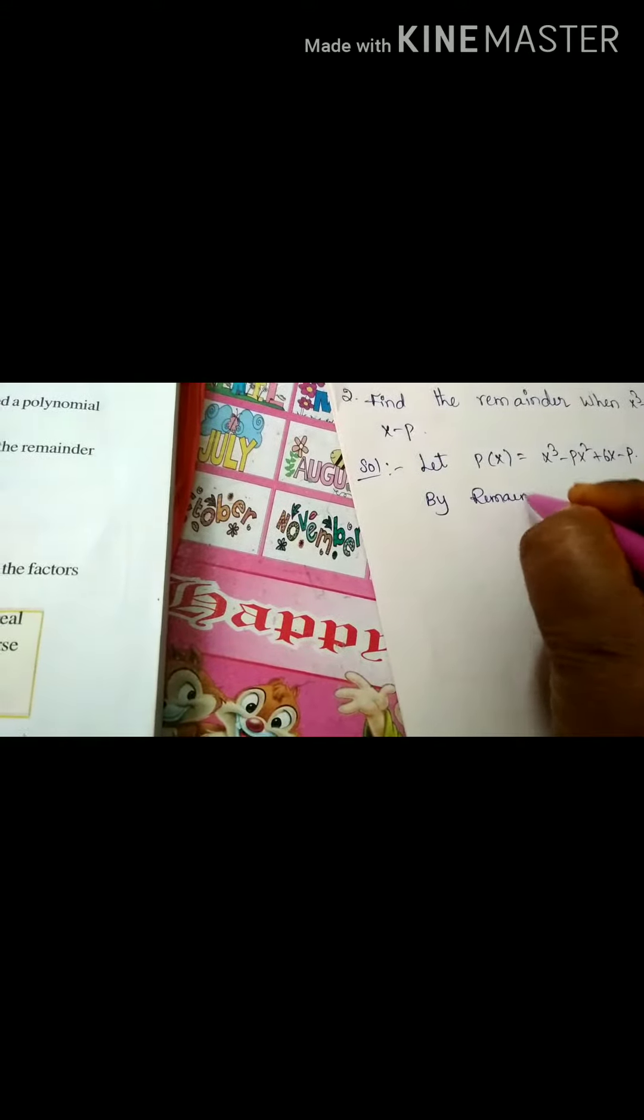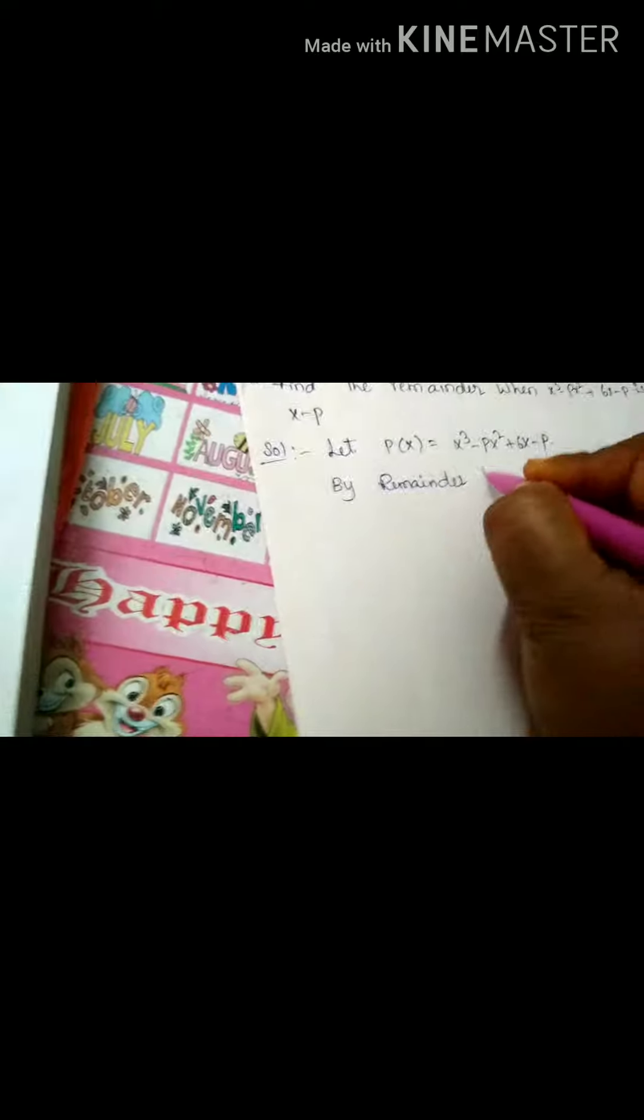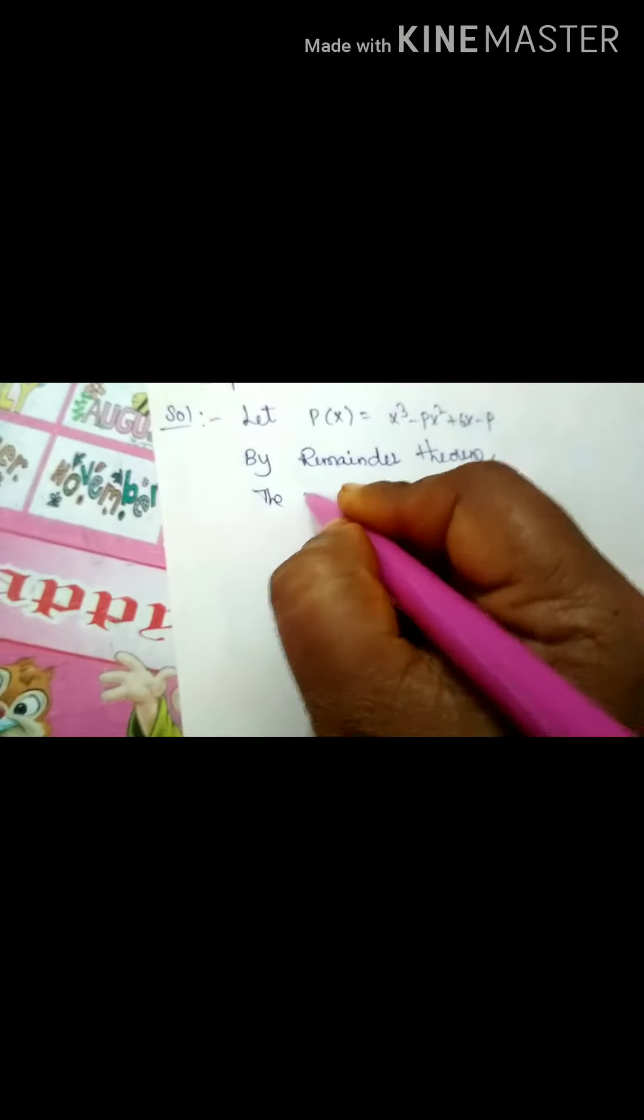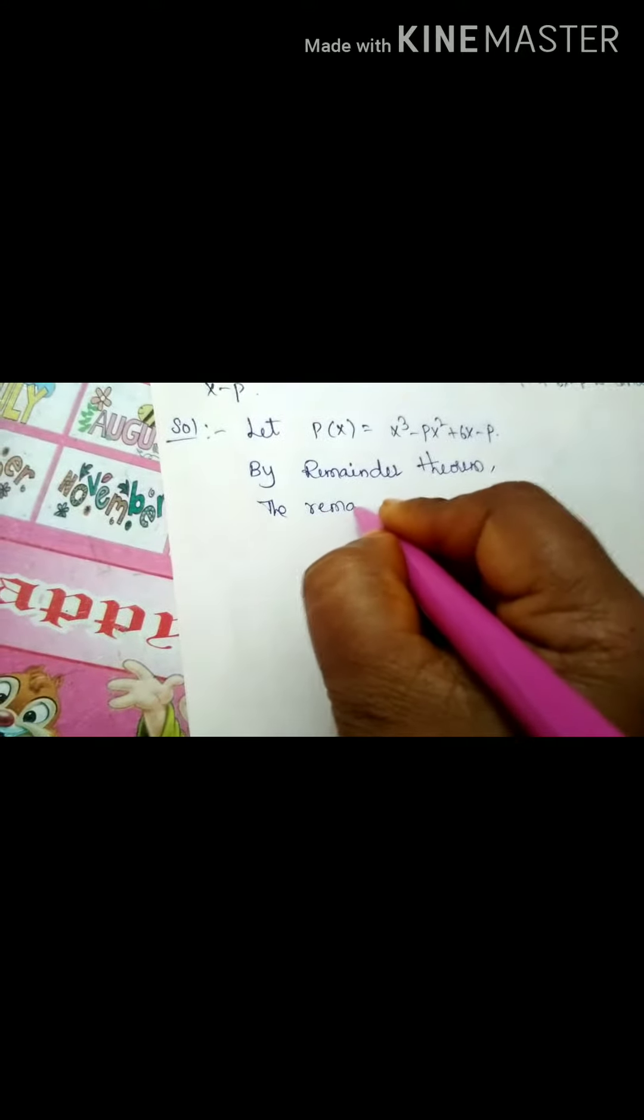By the remainder theorem, already we discussed how to find the remainder theorem. The remainder is p of a.